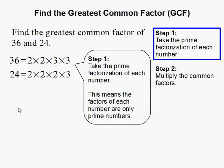The prime factorization of 24 is 2 times 2 times 2 times 3.